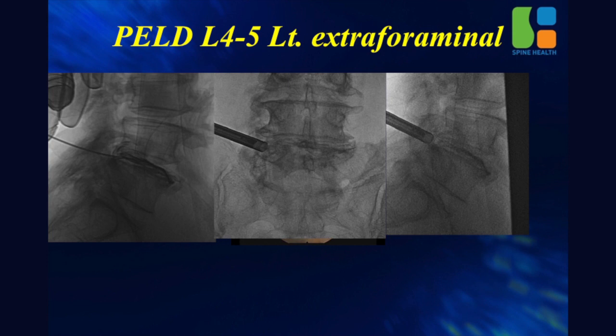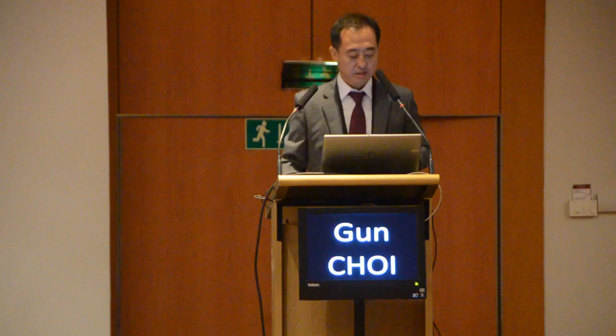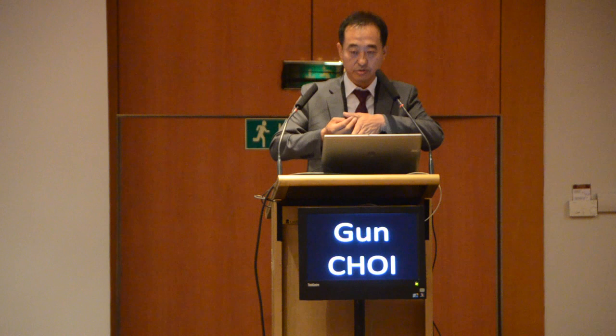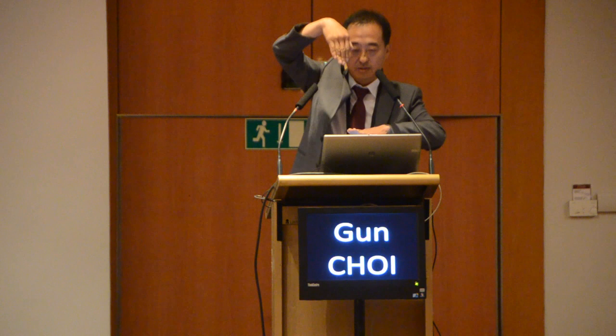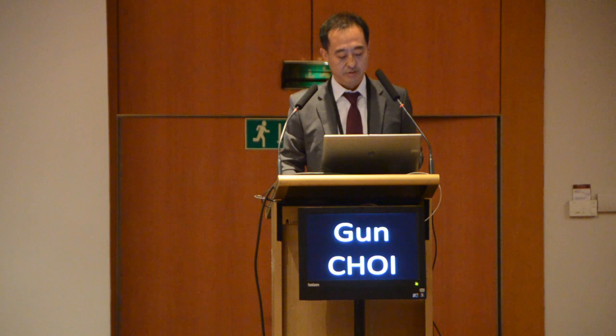You'd better perform this under local anesthesia so you can avoid that complication — it is the most common complication during this procedure. Especially if the herniation is extraforaminal disc herniation, it is just below the exiting root. If we go horizontally, we cannot see it and cannot bend. In that case, you have to go more straight — very close to the midline — and then you can safely visualize the extraforaminal disc herniation.